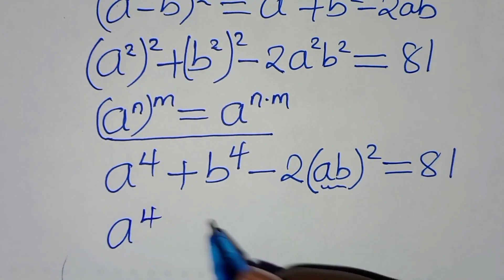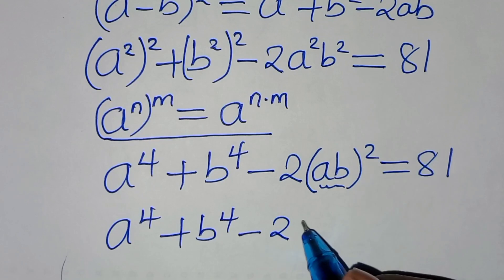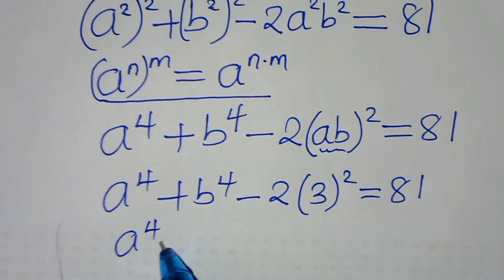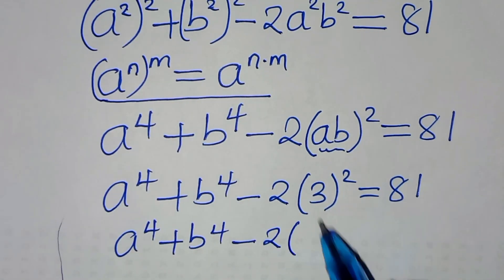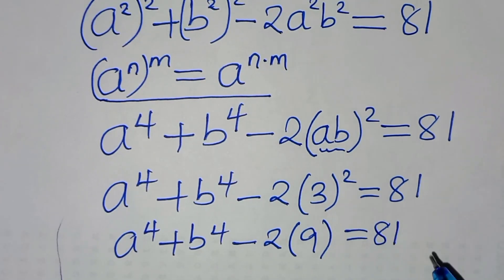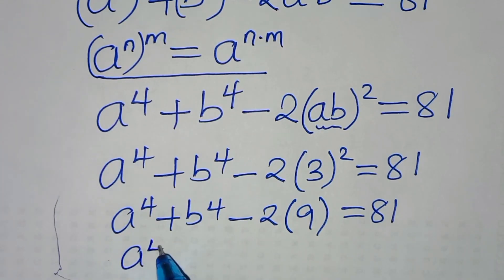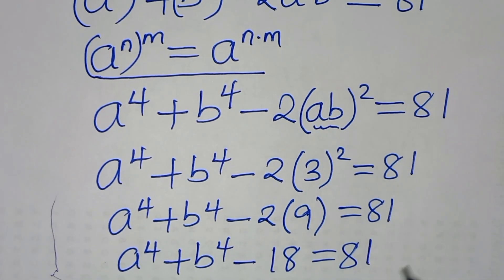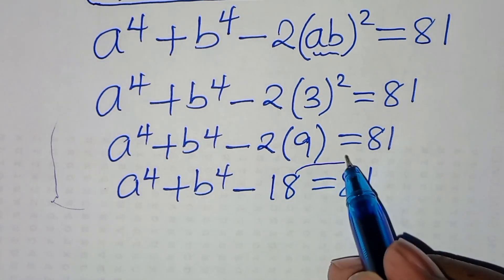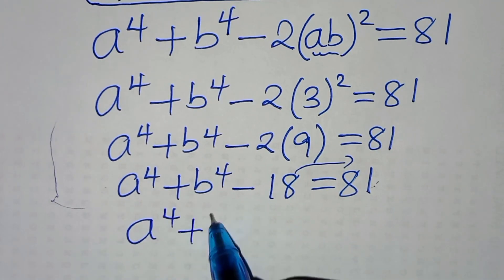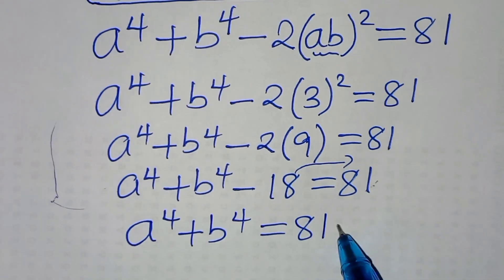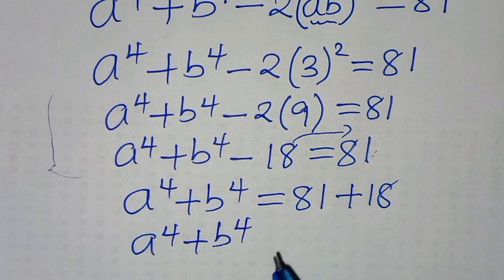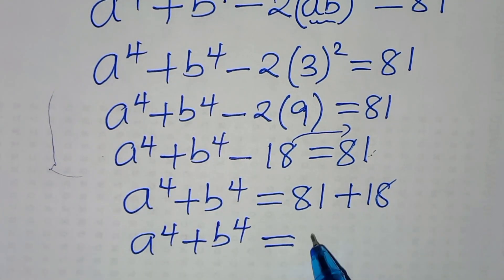Substituting ab = 3 gives a⁴ + b⁴ - 2·(3²) = 81, which is a⁴ + b⁴ - 2·9 = 81, so a⁴ + b⁴ - 18 = 81. Moving -18 to the right-hand side: a⁴ + b⁴ = 81 + 18 = 99.